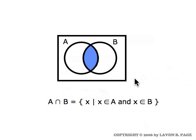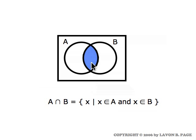A Venn diagram, when we're talking about two sets, consists of two overlapping circles. In this case the sets are A and B, so I have a circle labeled A and another circle labeled B, and those two circles are housed inside a rectangle which represents in some sense a universal set. The intersection of the two sets is all things they have in common, so to visualize the intersection we simply visualize the region which the two circles have in common — that is the space in the picture which is inside of both circles. It's painted blue in this picture, and the blue points are the points that are inside the A circle and also inside the B circle.